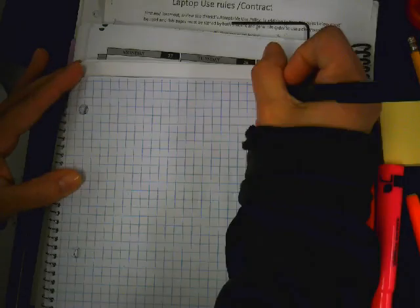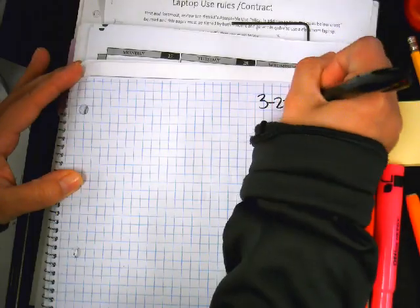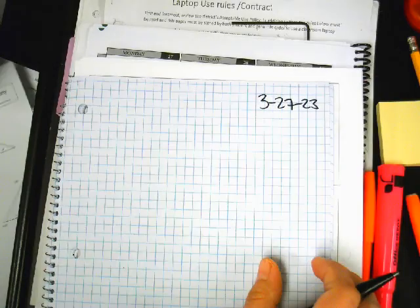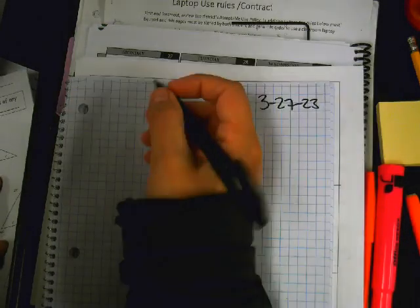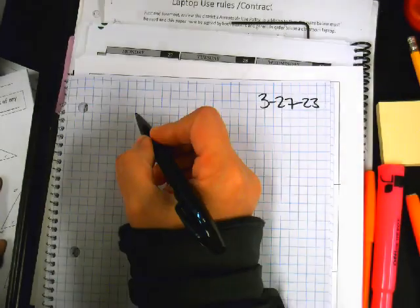Today is 3/27 and just a review from yesterday or Thursday. If I have a triangle,